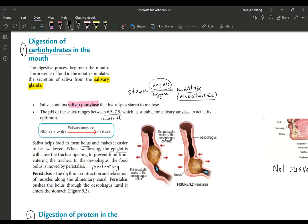The saliva comes from the salivary glands, which are three pairs of glands situated behind our ears and under the tongue. Saliva contains salivary amylase that hydrolyzes starch to maltose. The pH of the saliva ranges from 6.5 to 7.5, so we can roughly say it is neutral. The optimal condition for salivary amylase to work is at neutral condition.